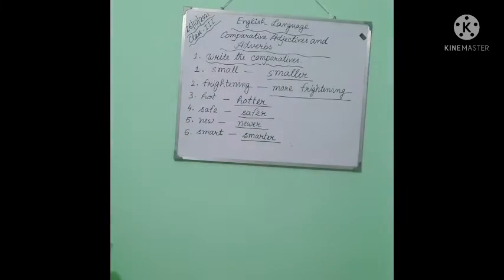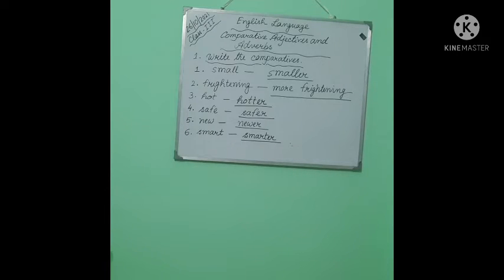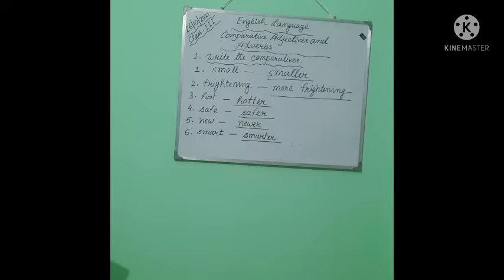Now look at this. Comparative adjectives and adverbs — write the comparatives. Number 1: small — smaller. Number 2: frightening — more frightening. Number 3: hot — hotter. Number 4: safe — safer. Number 5: new — newer. Number 6: smart — smarter.